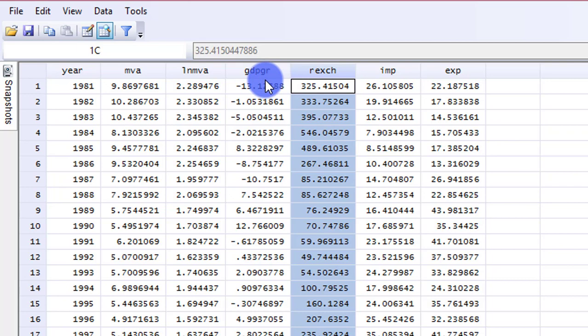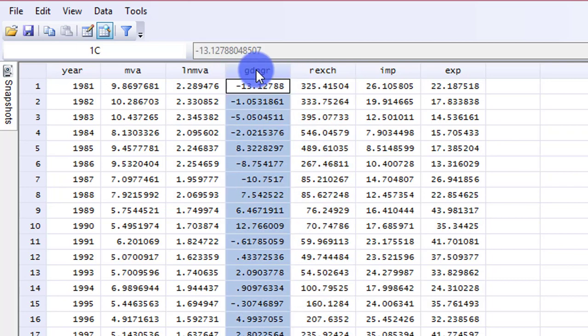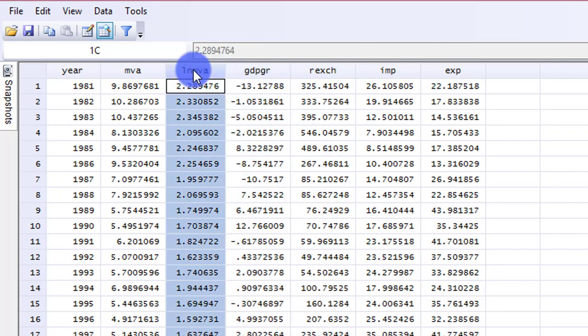GDP growth rate is stationary in levels, while the log of manufacturing value added and real exchange rates are stationary in first difference. So I'm having a combination of I(0) and I(1) series. So the bounds test is the most appropriate test to employ.